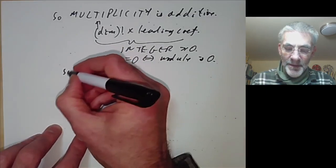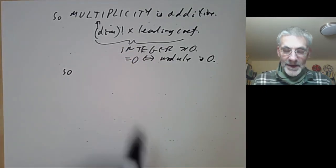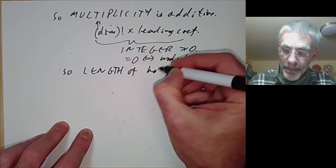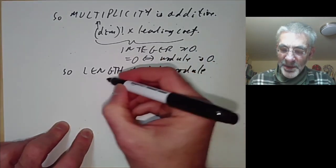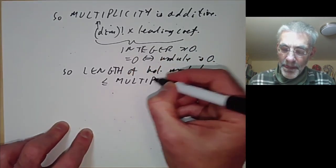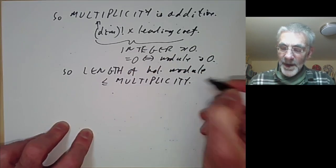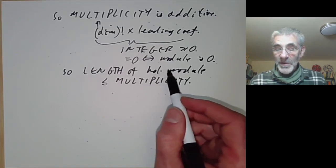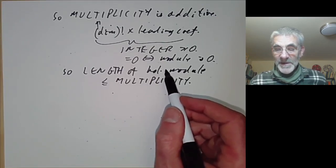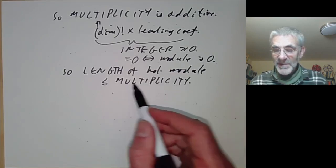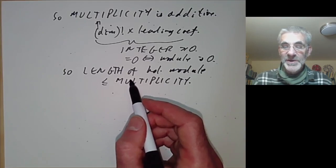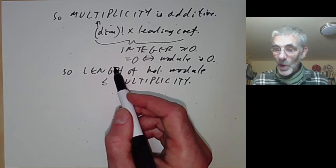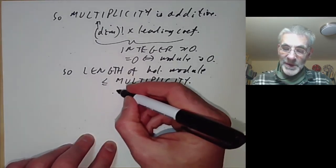In particular, the length of a module must not only be finite, but it's less than or equal to the multiplicity. Because if it has several composition factors, each of these composition factors has the same dimension. So the multiplicity of the module is the sum of the multiplicities of the composition factors, and each composition factor's multiplicity must be at least one. So the length is bounded by the multiplicity, which is finite.